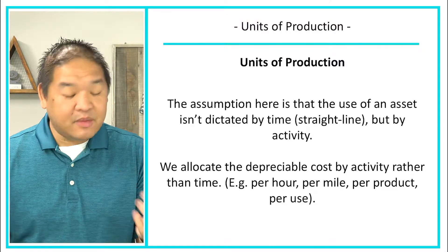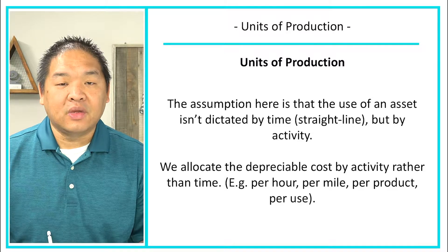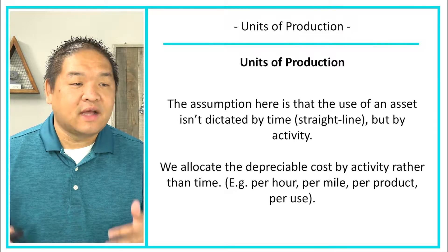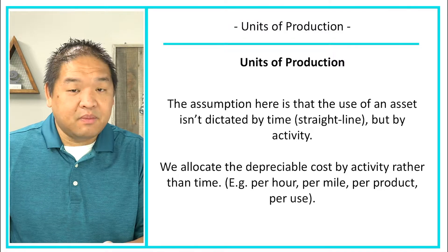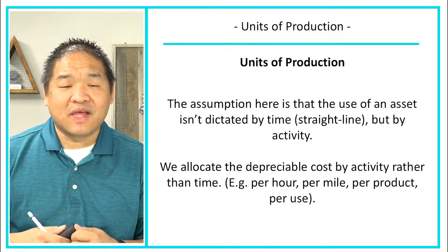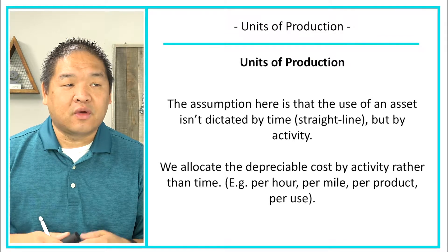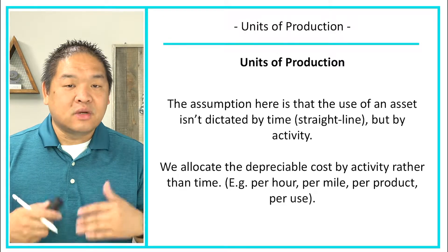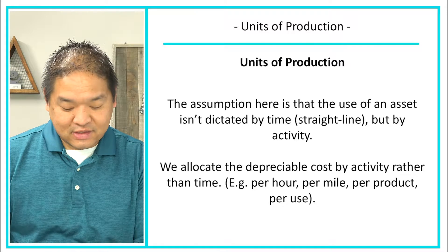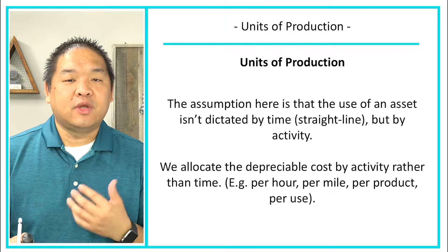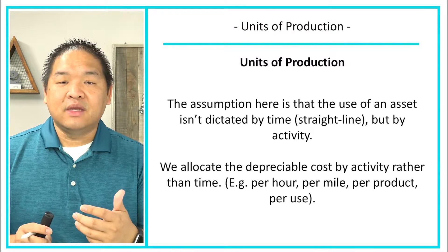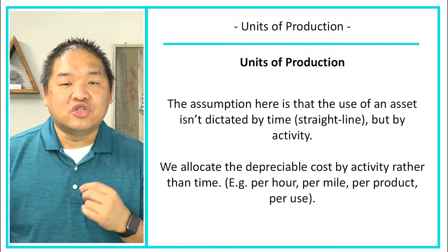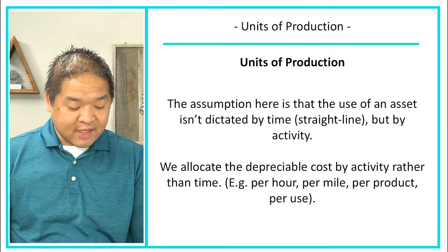Maybe per product that the machine outputs — perhaps it can only output 50,000 items, and once we get to 50,000 we have to replace the machine. Printers are a great example: a laser printer might be good for 250,000 sheets, and after that it just doesn't work anymore. So we could depreciate it by number of sheets printed, or per use — every time we use something. There's usually some type of activity that drives the usage and depreciation expense.